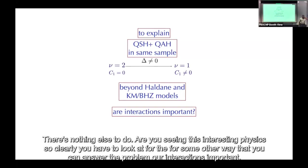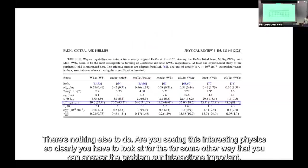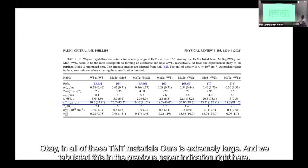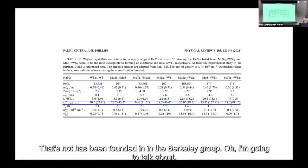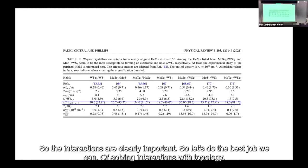Clearly you have to look for some other way to answer the problem. Are interactions important? In all these TMD materials, r_s is extremely large. The interactions are clearly important — in different contexts, TMD materials have been listed as great candidates for Wigner crystallization, and some of that has been found in the Berkeley group.